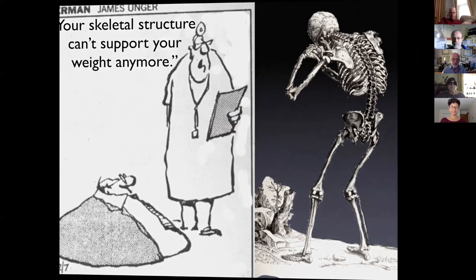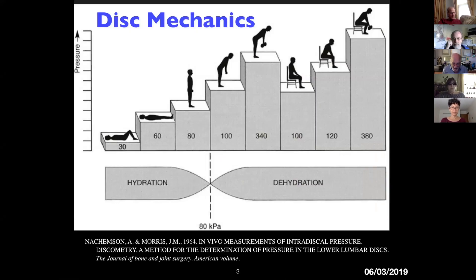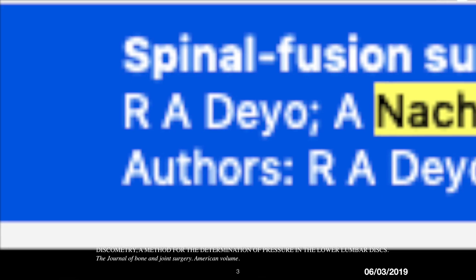In 1964, Nackamson and Morris did some in vivo intradiscal pressure measurements. Nackamson was professor of orthopedics at the Carolina Institute in Sweden, and he made his international reputation on this paper. He became internationally famous in orthopedic circles and stayed that way.